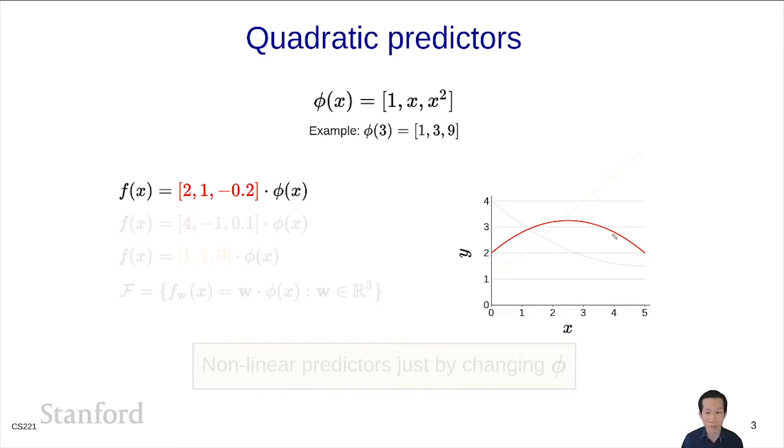That's a nonlinear predictor. It has an intercept of 2, a slope of 1 at the origin, and a curvature of -0.2. Here's another one, [4, -1, 0.1]. Here's an intercept of 4, a slope of -1, and a curvature of 0.1.